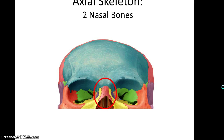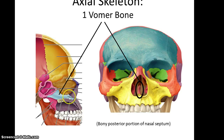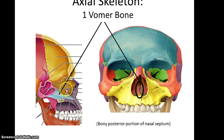The nasal bone — there are two nasal bones, one and two. The vomer bone is the bone that forms the inferior portion of the nasal septum. It articulates with the perpendicular plate of the ethmoid bone.